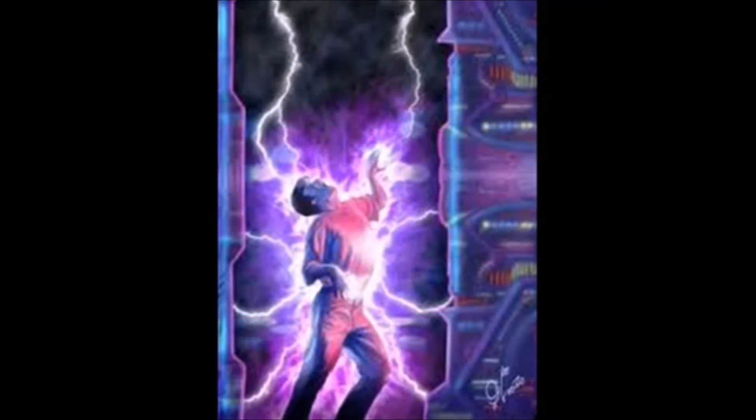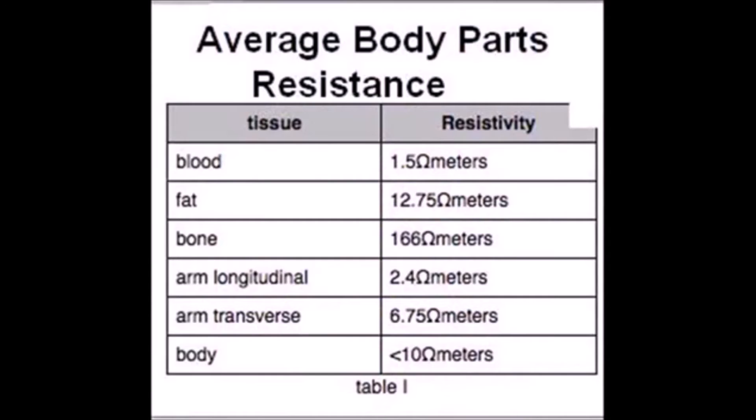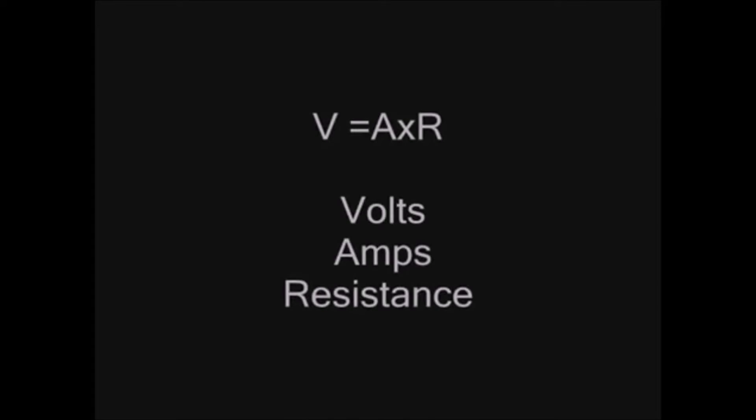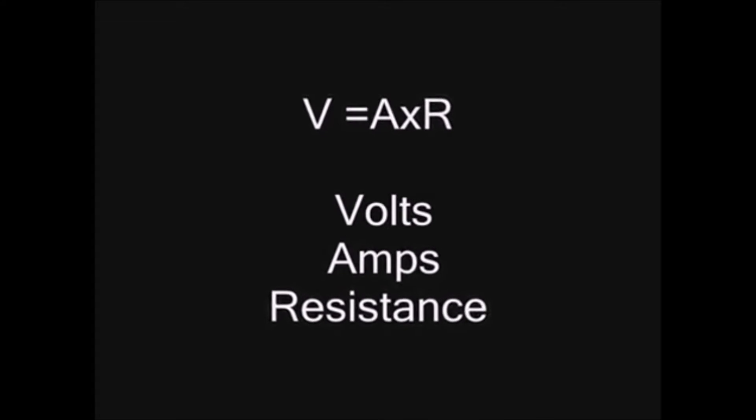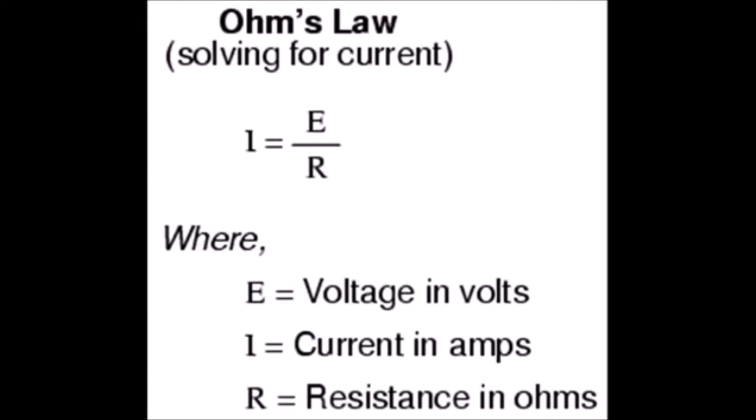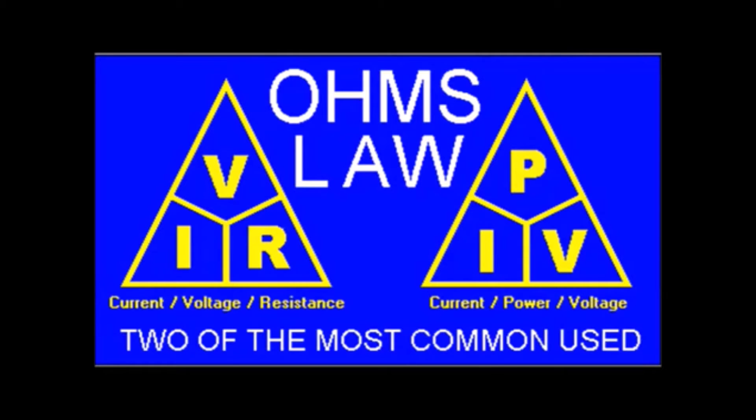Resistance has to do with the flow of electricity through the body. If we look at the basic formula of Dr. Ohm, volts equals amps times resistance. This gives us a basic idea, and it's not a perfect mathematical formula. It's what is known as a correlate.